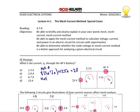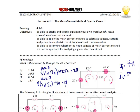The KVL equation for mesh B is going to be 8 times (IA plus IB) minus 40, and that equals 0. So we end up with two equations and two unknowns. IA is equal to negative 5/3 amps and IB is equal to 20/3 amps, which is approximately 6.7 amps. So the answer is letter C.